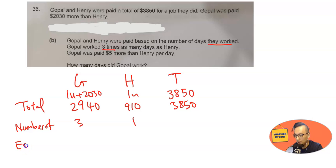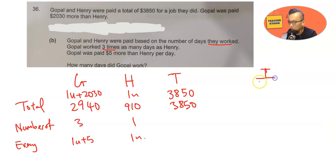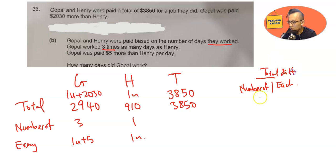Every day, Gopal was paid 1u plus 5 and Henry was paid 1u. If you look at a standard total/number/each question, this is actually a total difference divided by each difference, which gives you the number of difference.